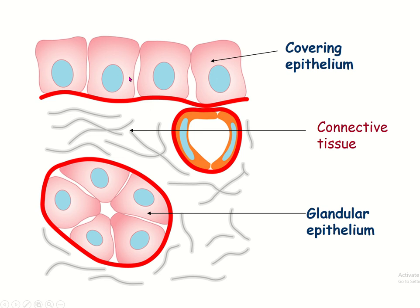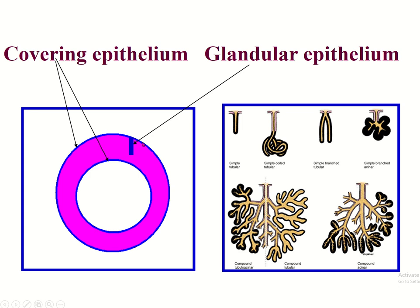From the covering epithelium, glandular epithelium arises. If the connection with the covering epithelium is lost, it is an endocrine gland. If the connection persists, the connected portion is the duct and the secretory portion forms an exocrine gland. If the duct is one in number, it is a simple gland; if the duct is more than one, it is classified as a compound gland.